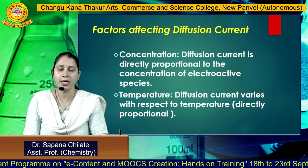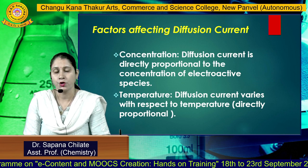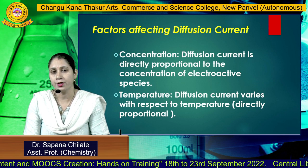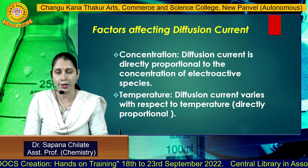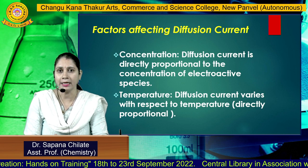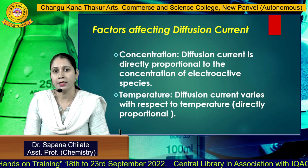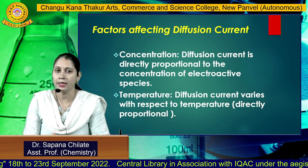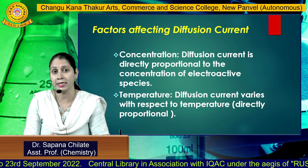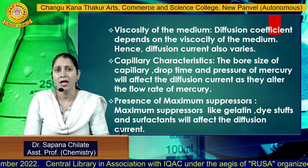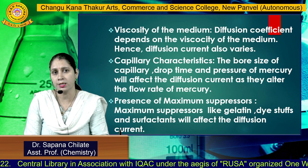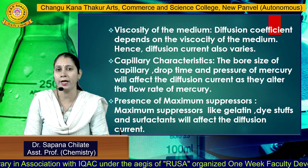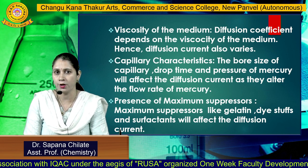What are the different factors which can affect the diffusion current? The first important factor is concentration — diffusion current is directly proportional to the concentration of electroactive species. Then, temperature: if the temperature varies, the diffusion current can also vary, as it is directly proportional to temperature. Viscosity of the medium also plays a very important role because diffusion current varies with change in the viscosity of the medium.